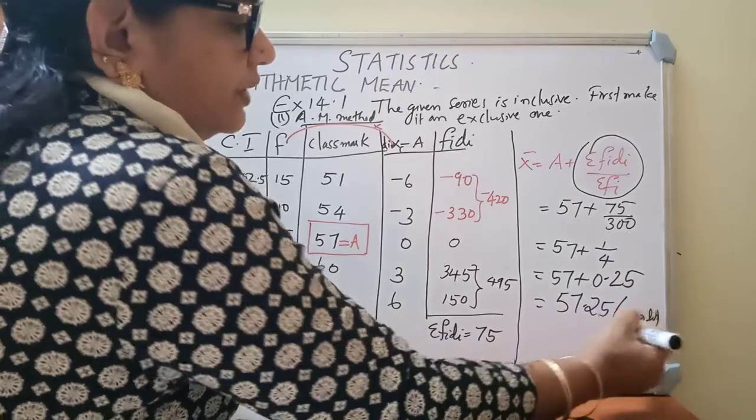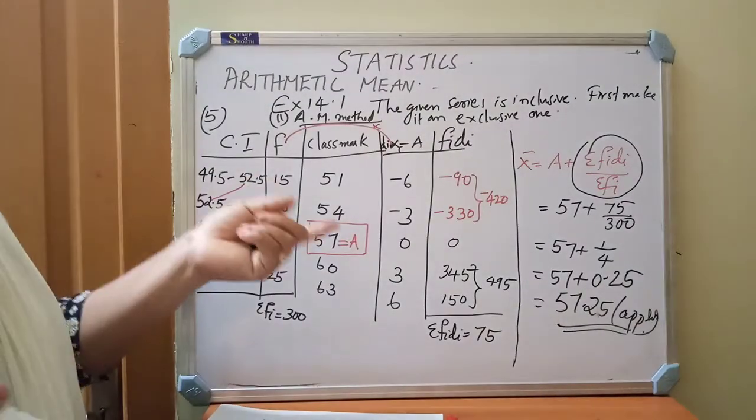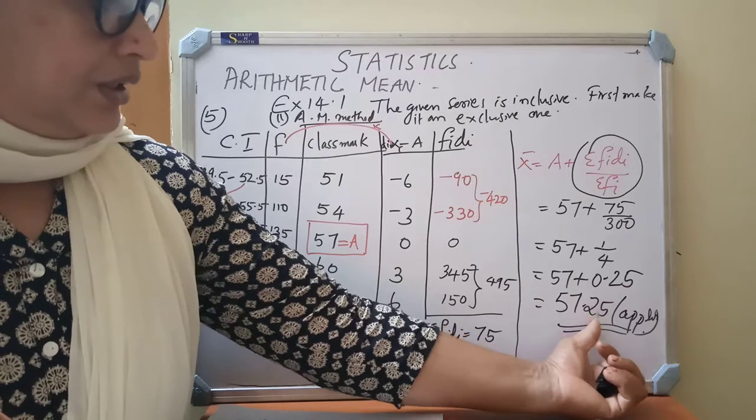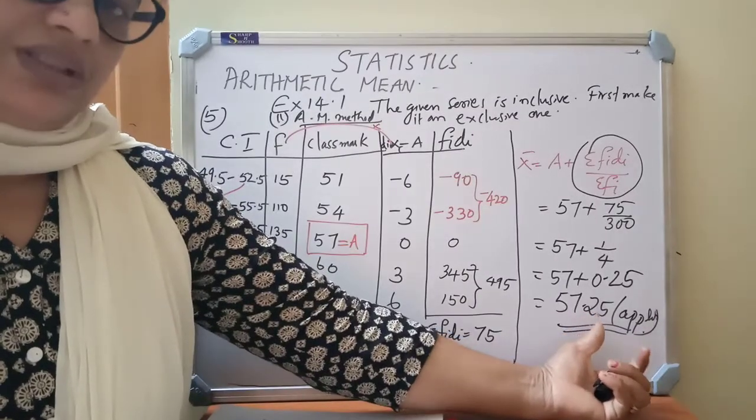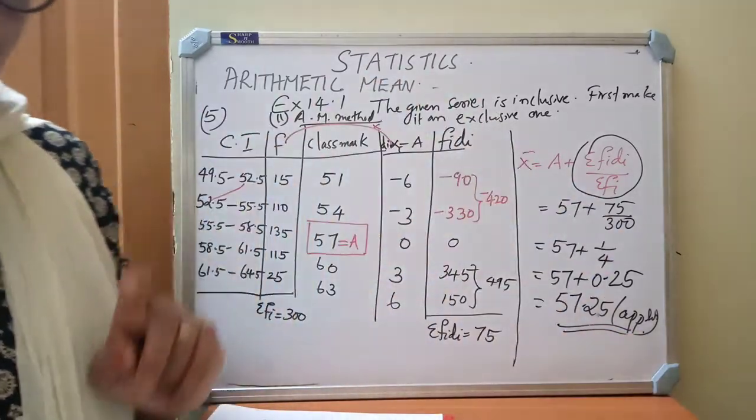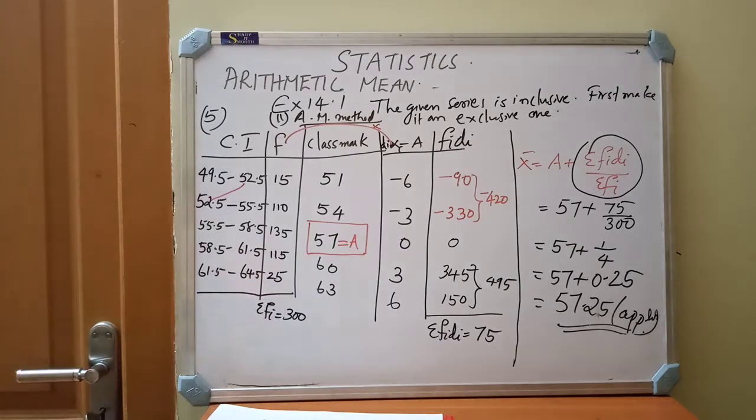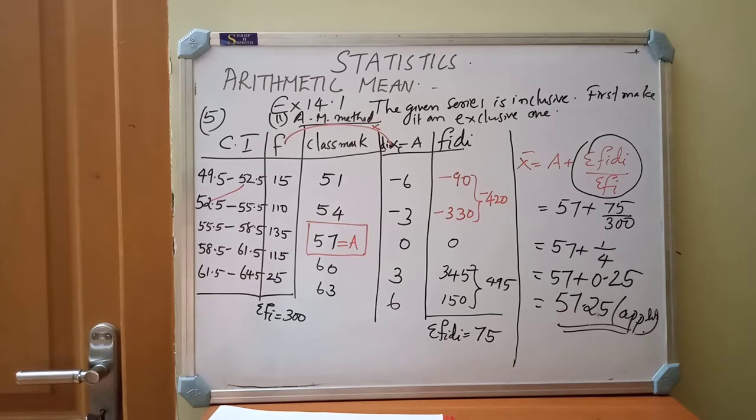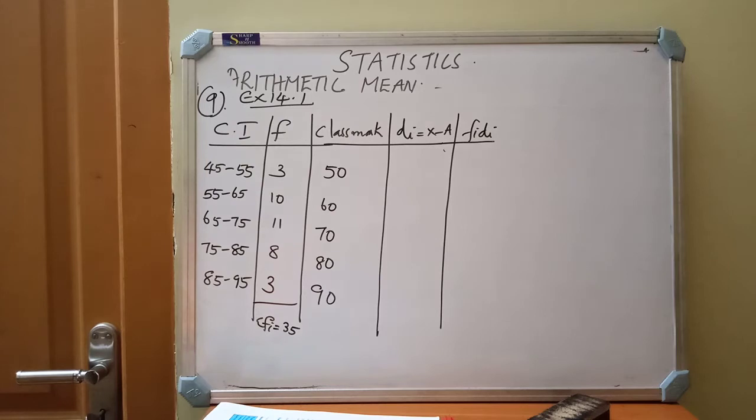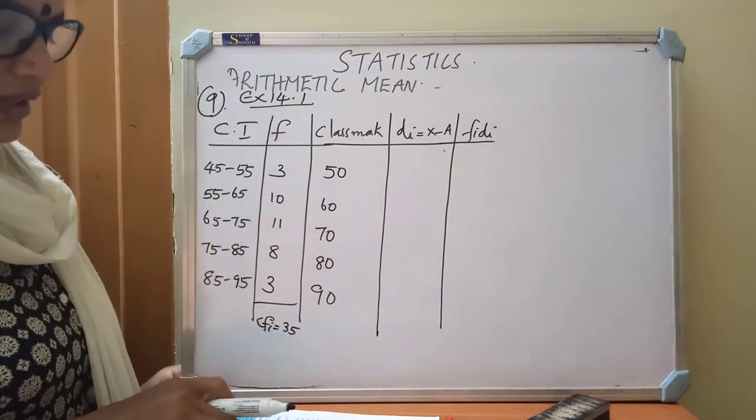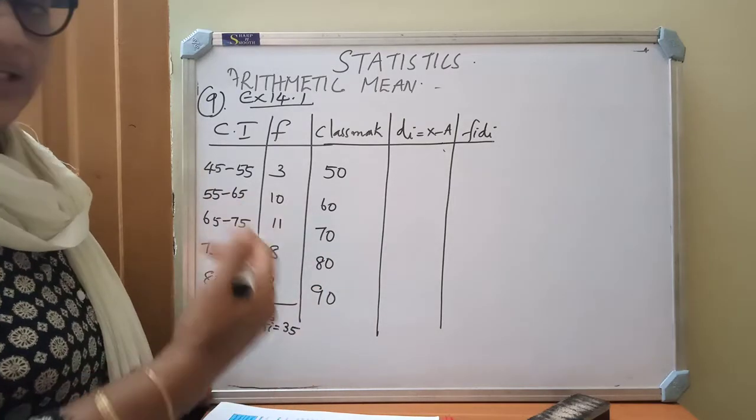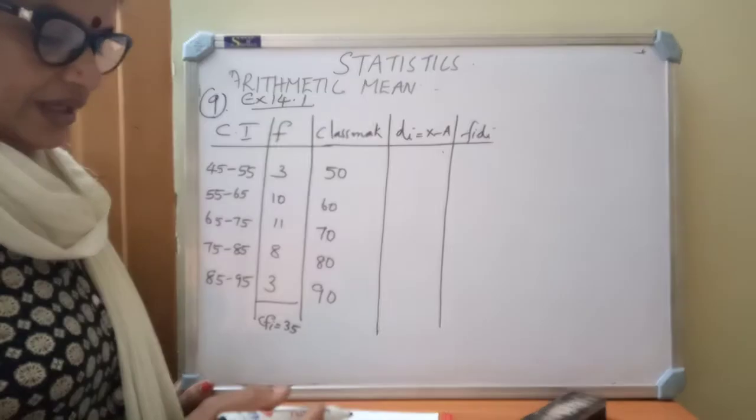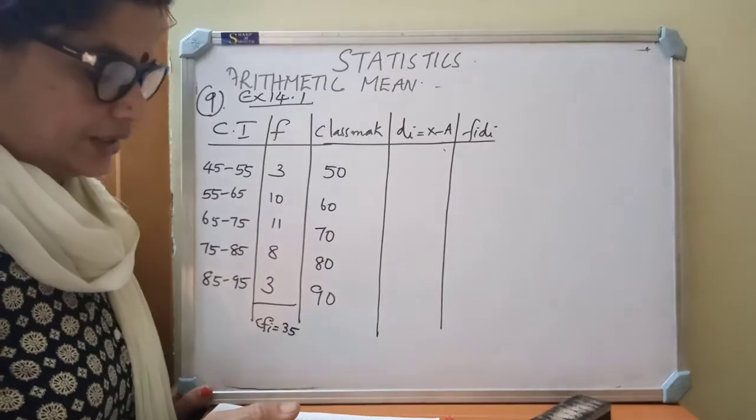57 plus 0.25 is 57.25 approximately. Because we in median mode center, we don't know the perfect values. Whatever based on that we are doing and finding. So slight difference in the decimal places comes. That don't bother about that. You must write there as approximately. See the next question children. Exercise 14.1, question number 9. The following table gives the literacy rate in percentage of 35 cities. Find the mean literacy rate.